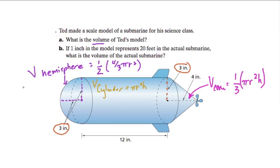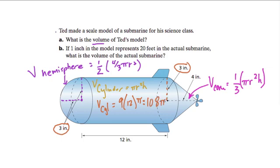Let's start with the cylinder. The volume of the cylinder equals pi r squared times height: that's 9 — r squared, 3 times 3 — times the height of 12, times pi. Simplifying, 9 times 12 is 108, so the volume of this cylinder is 108π cubic inches.